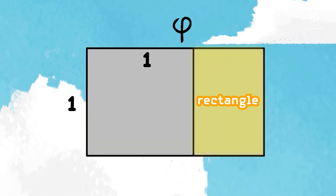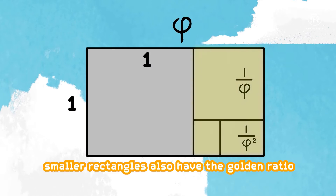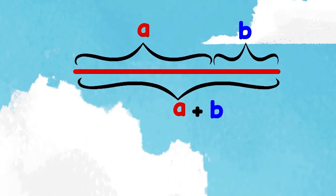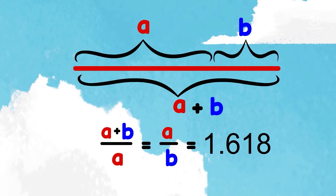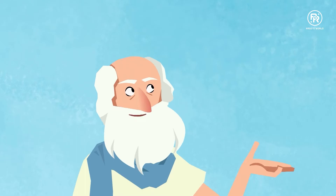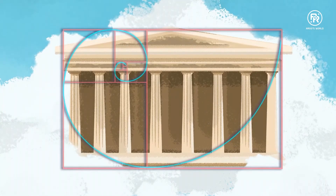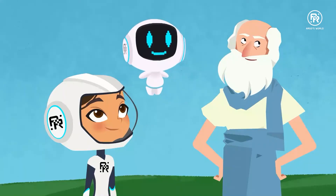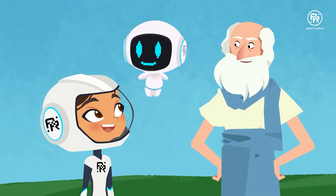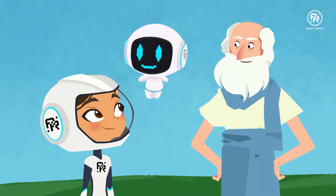When the whole length divided by the long part is equal to the long part divided by the short part, you get the golden ratio: 1.618. This golden rectangle can be progressively split into a smaller square and rectangle. The smaller rectangles also have the golden ratio. It even works with just a line. Wow. But how do we use the golden ratio in architecture? Here is the Parthenon. And here is the golden ratio. The dimensions are the same.